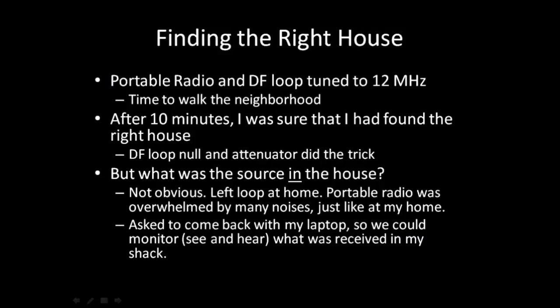Walking around the neighborhood and looking rather foolish with my portable radio plugged in, I tuned the loop and the radio to 12 MHz, and after about 10 minutes I found what I was pretty sure was the right house. Using the null and the attenuator, I was actually pretty sure which side of the house or where in the house the noise was coming from. So I went and knocked on the door, introduced myself, and found a way to explain what I was doing. I left the loop at home because it was kind of big and ugly, but once inside with the portable radio, it was overwhelmed by many different noises — just like in my own house. So that was no good for figuring out which was which.